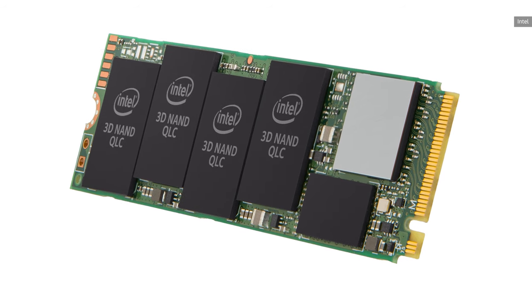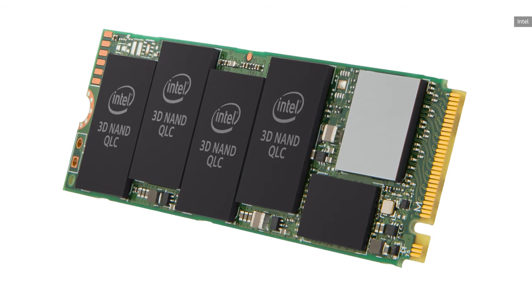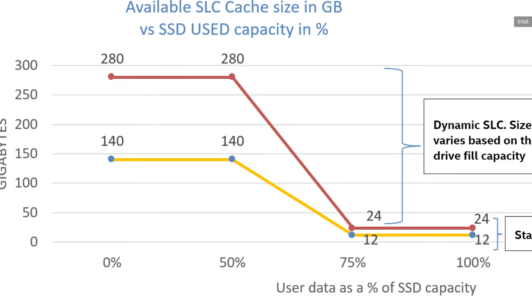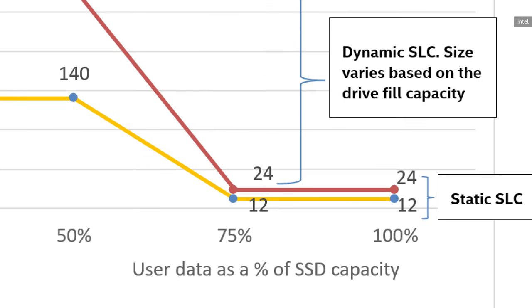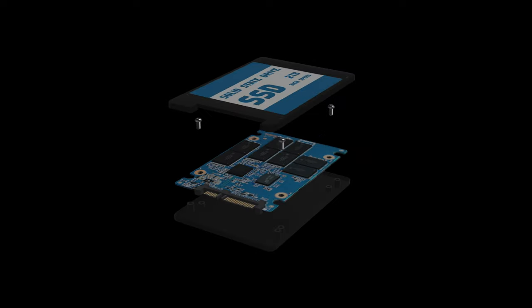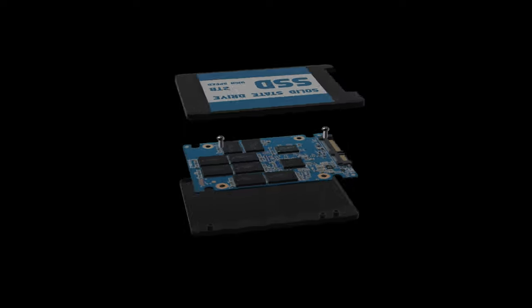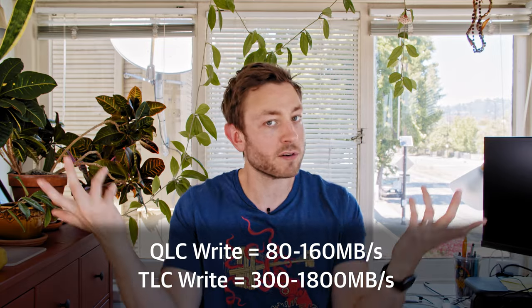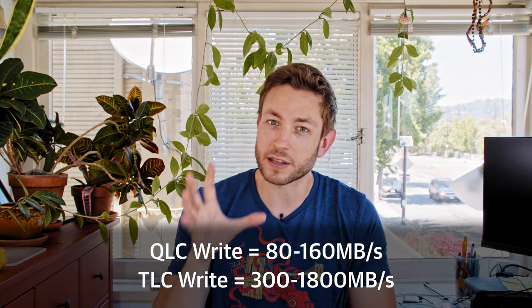In that Intel 2TB 665P drive, as the drive passes 50% capacity, the cache shrinks rapidly — from 280GB down to a mere 24GB at 75% full. At that point, any file transfers or operations that exceed that 24GB capacity in a short amount of time will see their write performance drop by 95%. This isn't new — TLC drives actually do the exact same thing, but the write performance of a TLC drive is about 10 times better than QLC, so if you run out of cache, the difference just isn't nearly as stark.